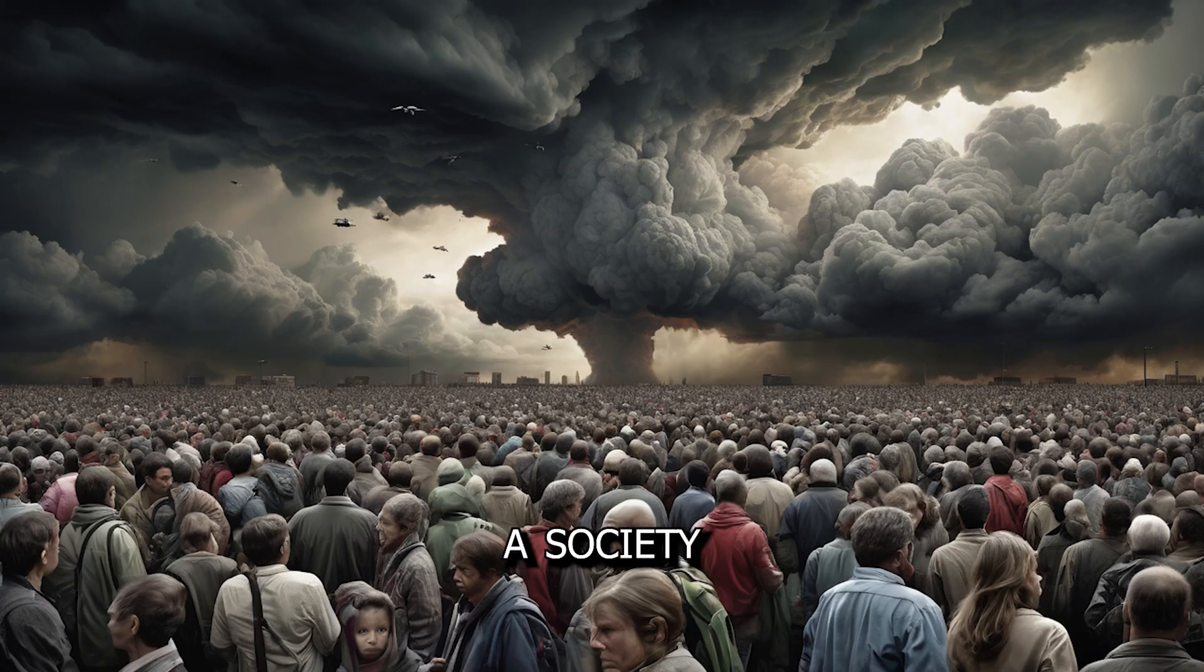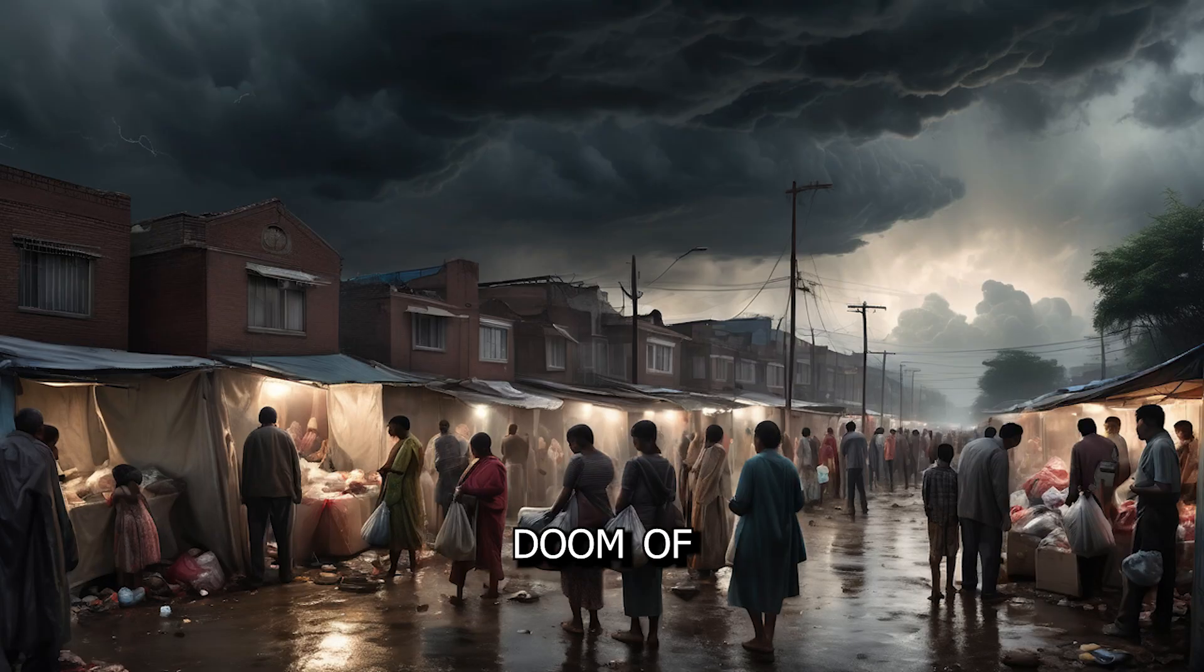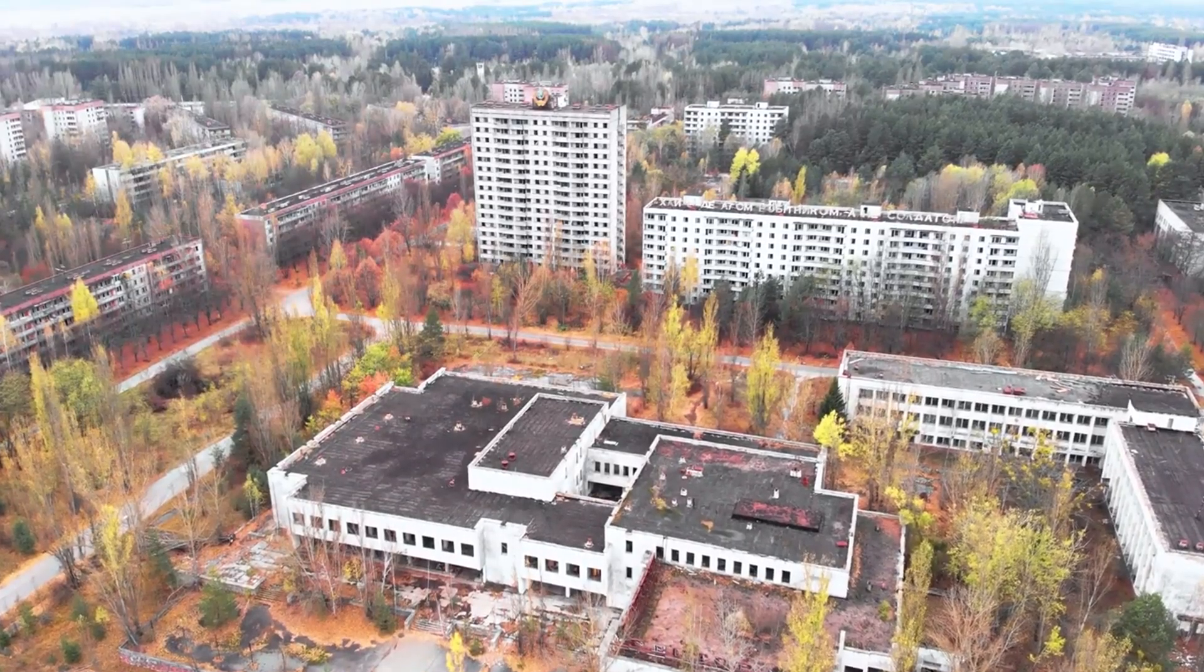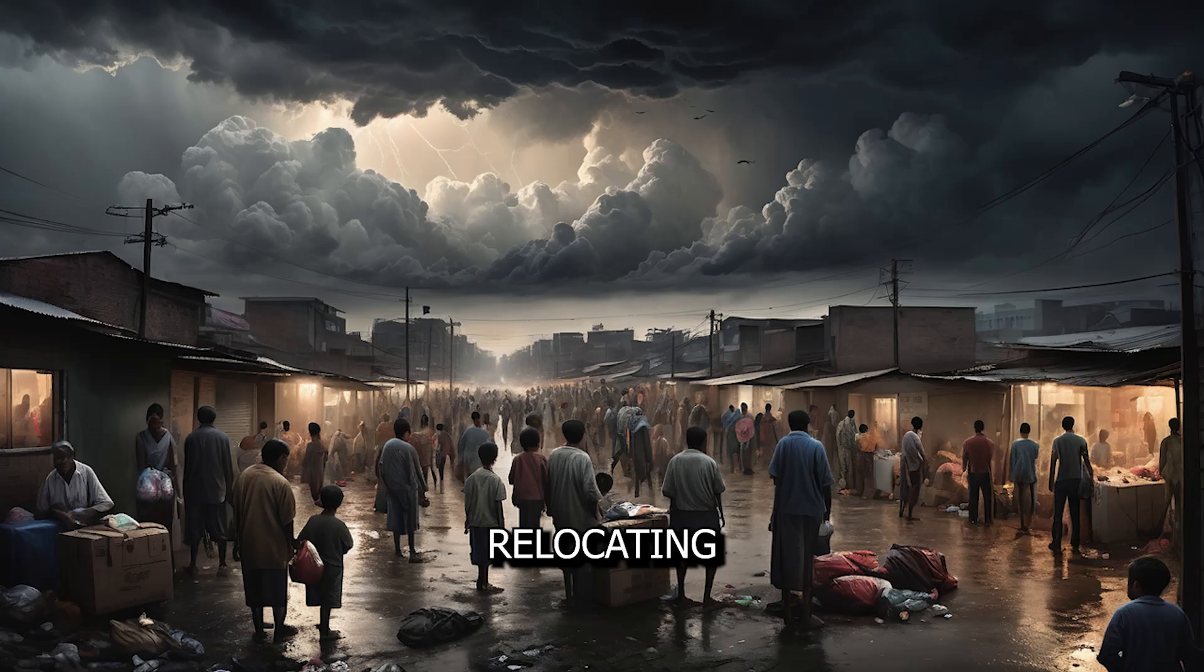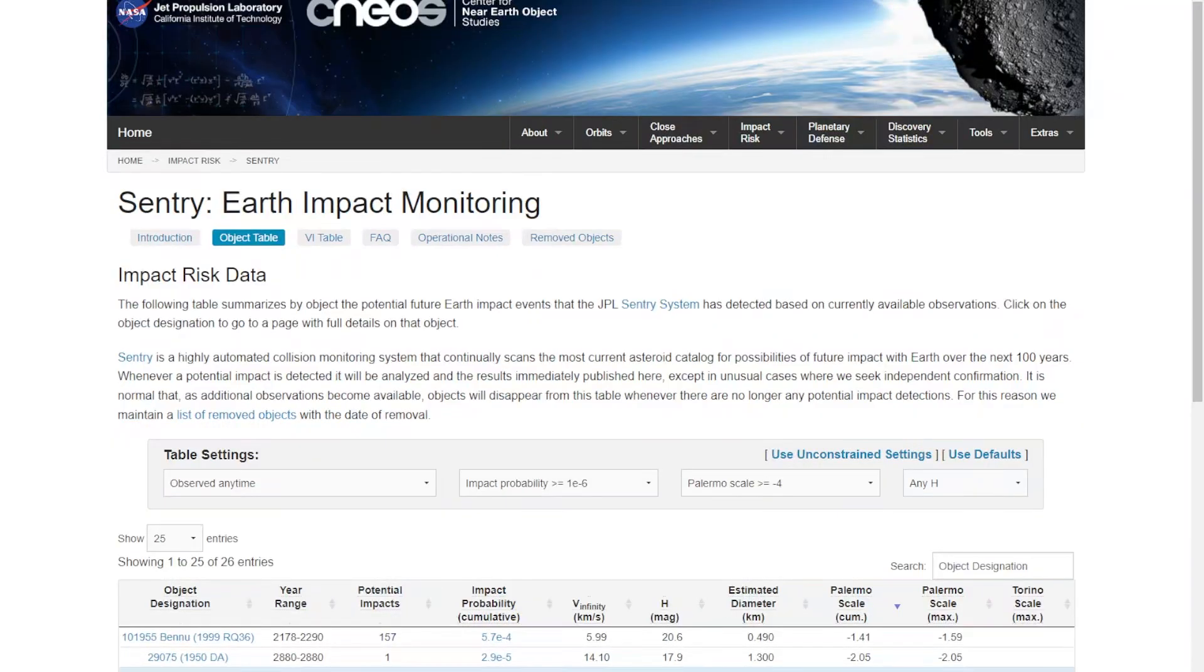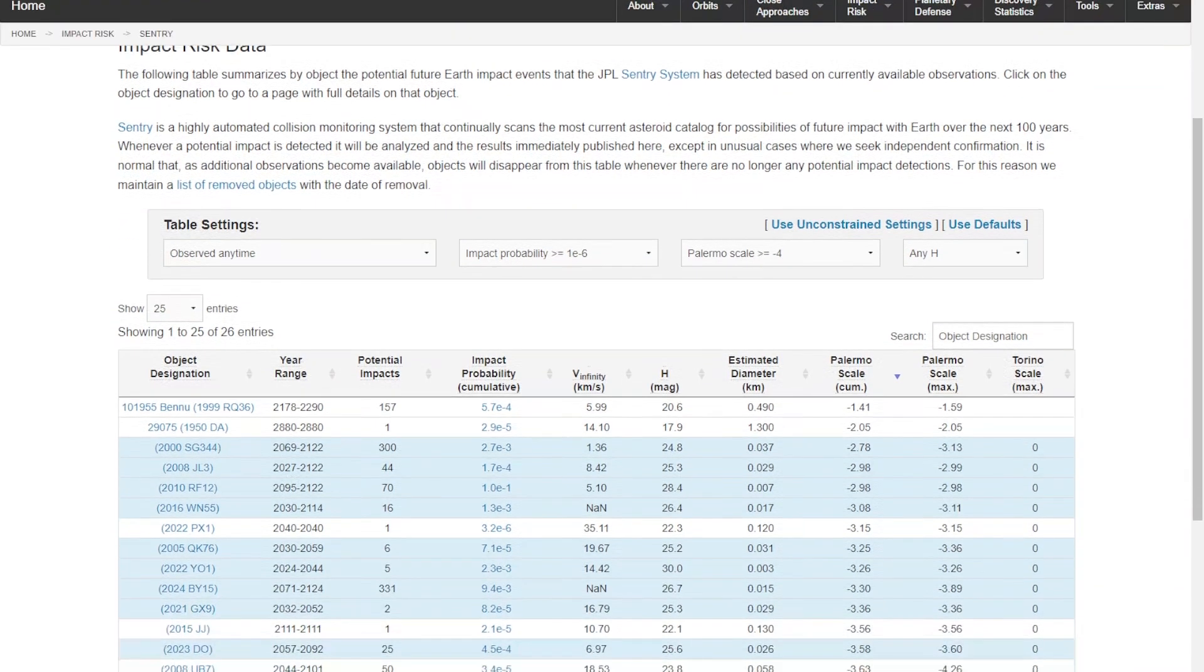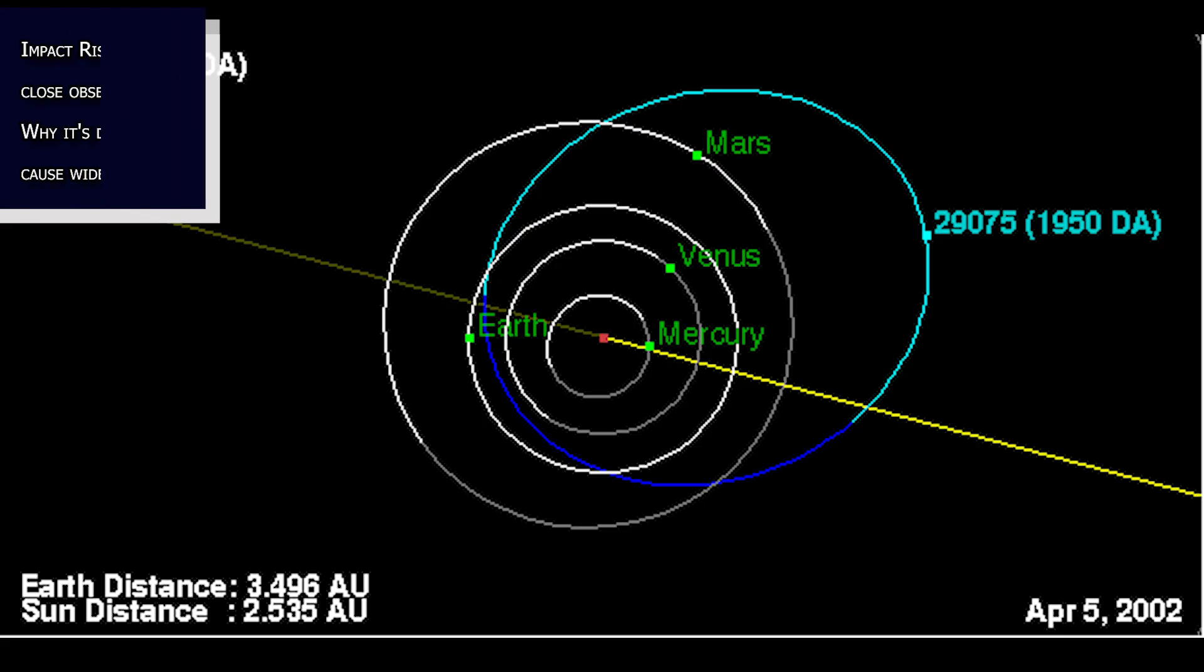Envision living in a society where the potential doom of your descendants is a known factor. Would coastal cities be abandoned far in advance, their inhabitants relocating inland? Would annual Bennu risk calculations be a part of daily life, as common as weather reports? Bennu forces us to confront the long-term, multi-generational nature of the asteroid threat.